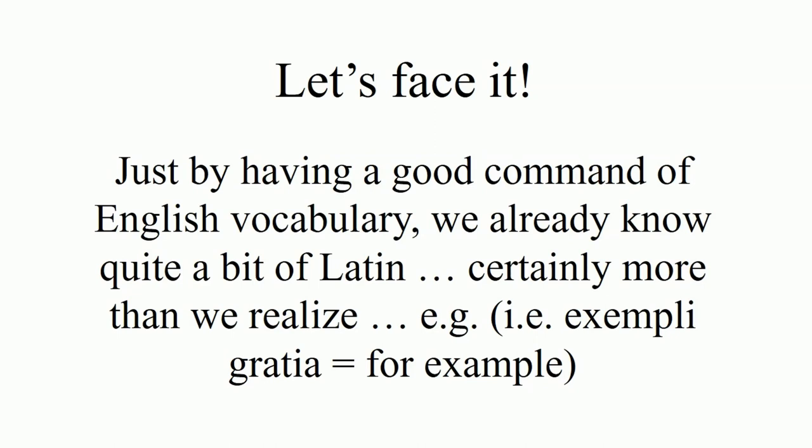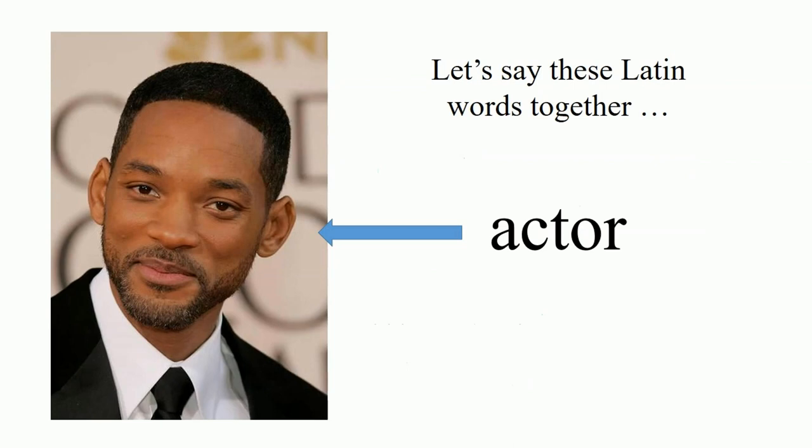Exempli gratia — e.g., for example. Let's say these words together. Actor. Who is an actor? Someone who agit, right? Ago, agere — to do, to drive. An actor is a doer.